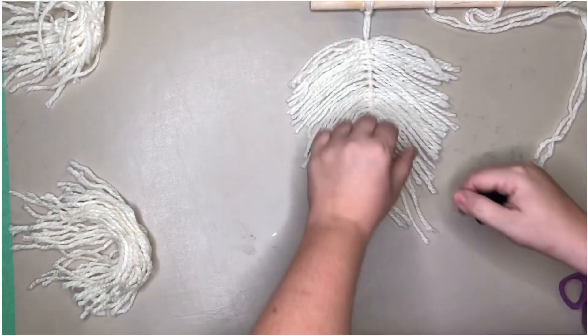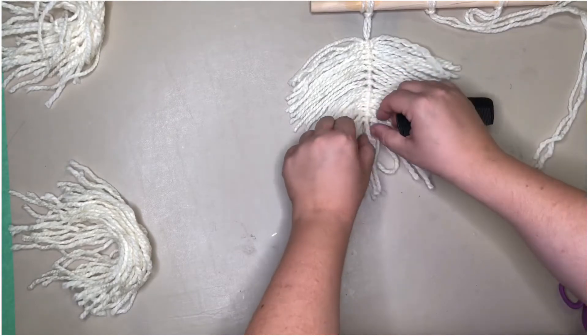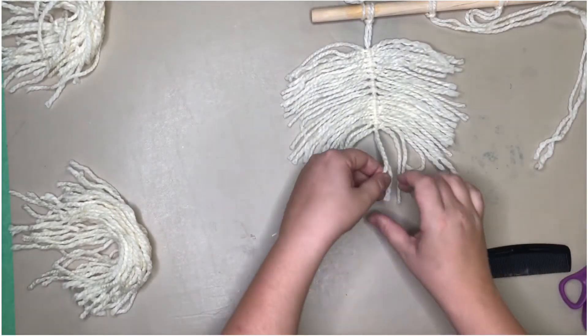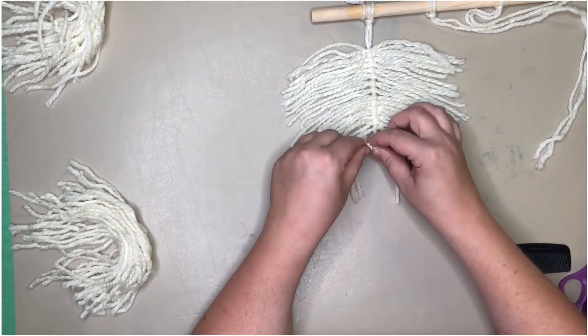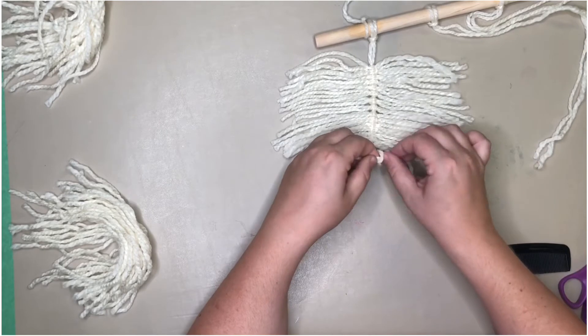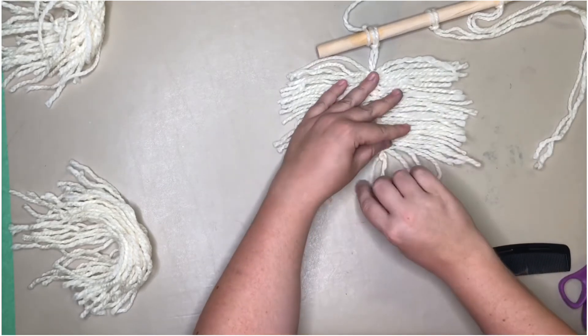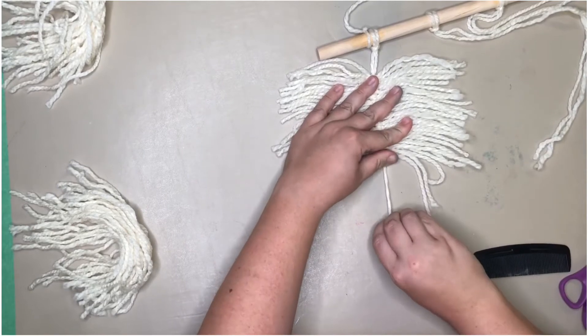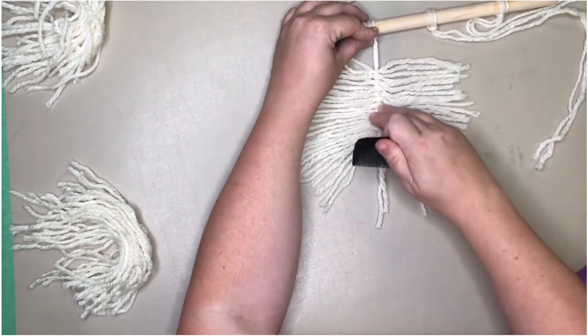Now I realized when I did this, I forgot to tie the bottom. So now I'm going to double knot the bottom pieces just so the attached pieces don't fall off. And then comb it out a little bit more.